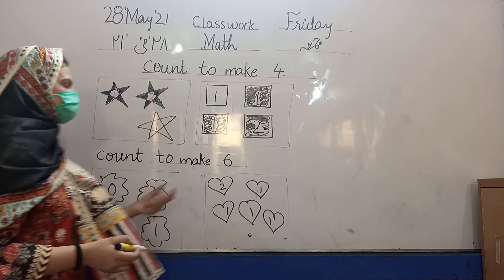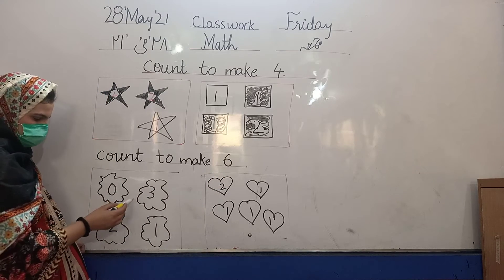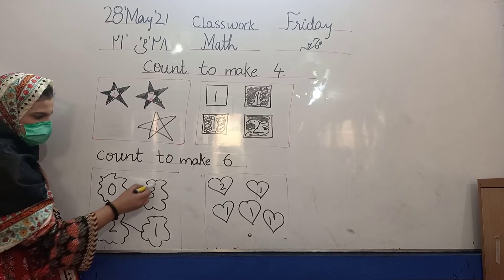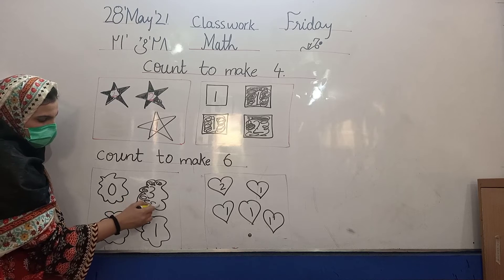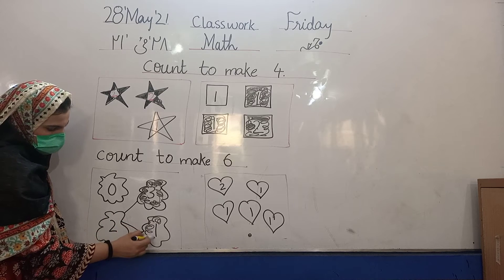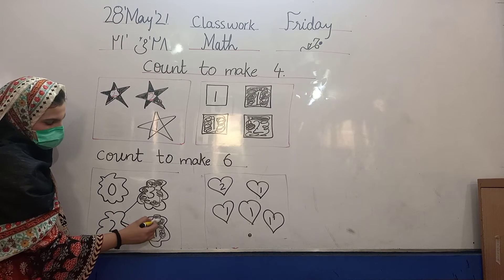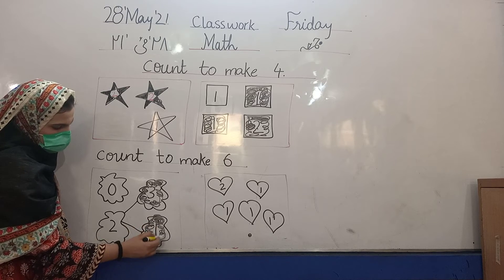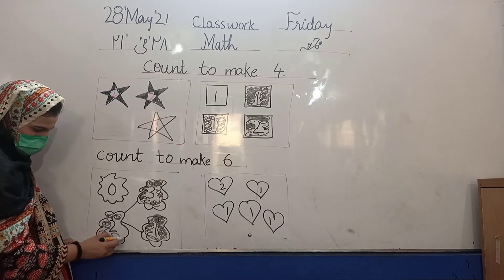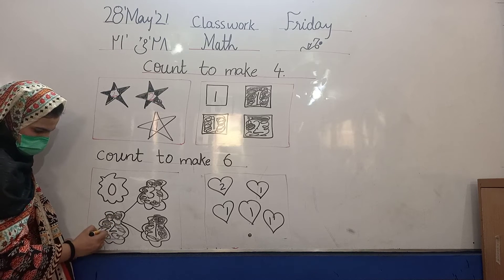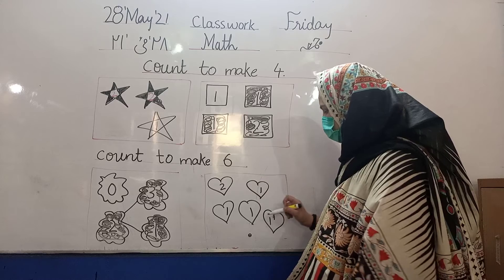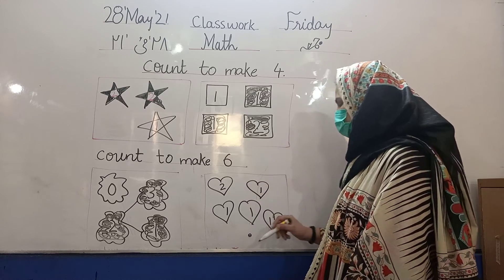Count to make 6. 3 plus 2 is equal to 1, 6. 3 plus 1 is equal to 2. The answer is 6. 3 plus 2 plus 1 is equal to 6. 2 plus 1 plus 1: 1, 2, 3, 4, 5, 6.